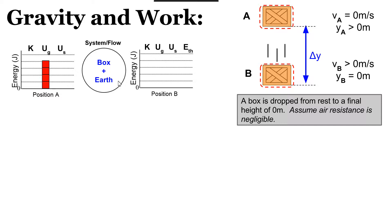At position B, the box is down to a height of zero, so there's no gravitational potential energy. Again, there's no spring potential energy. Because air resistance is negligible, things aren't heating up — there's no increase in thermal energy in either the box or the air. But the box is moving, so it's going to have some energy stored in the kinetic energy account.